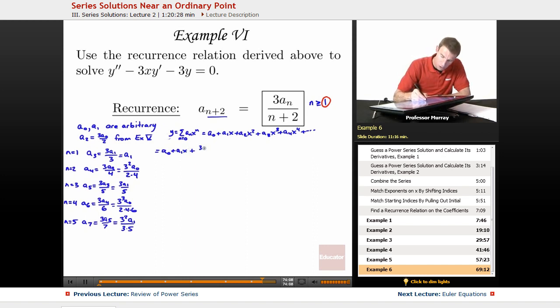A0, nothing we can do with that because it was arbitrary. A1 x, nothing we can do with that. A2 x squared, now our A2 was 3A0 over 2. Our A3 was A1 x cubed. Our A4 was 3 squared A0 over 2 times 4, x to the 4th.